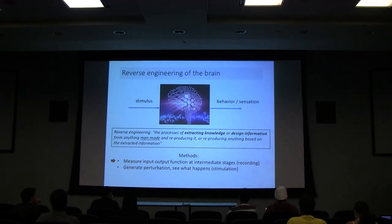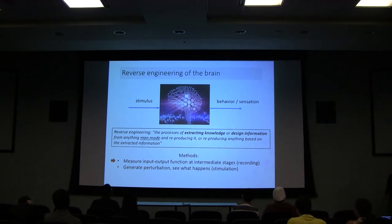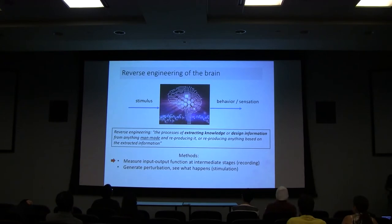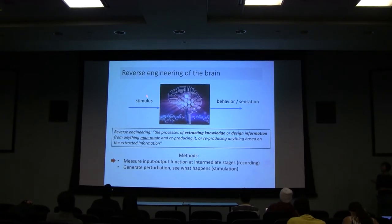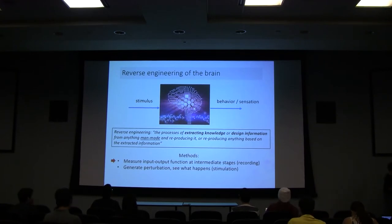Before I start, I'd like to step back and think about what neuroscientists are doing. From an engineer's point of view, it's like reverse engineering the brain. The ultimate goal is to figure out what's in this black box — you have inputs which are the stimuli, outputs which are behavior or sensation, and you want to figure out how each component in the brain works and how the brain processes stimuli to generate outputs.